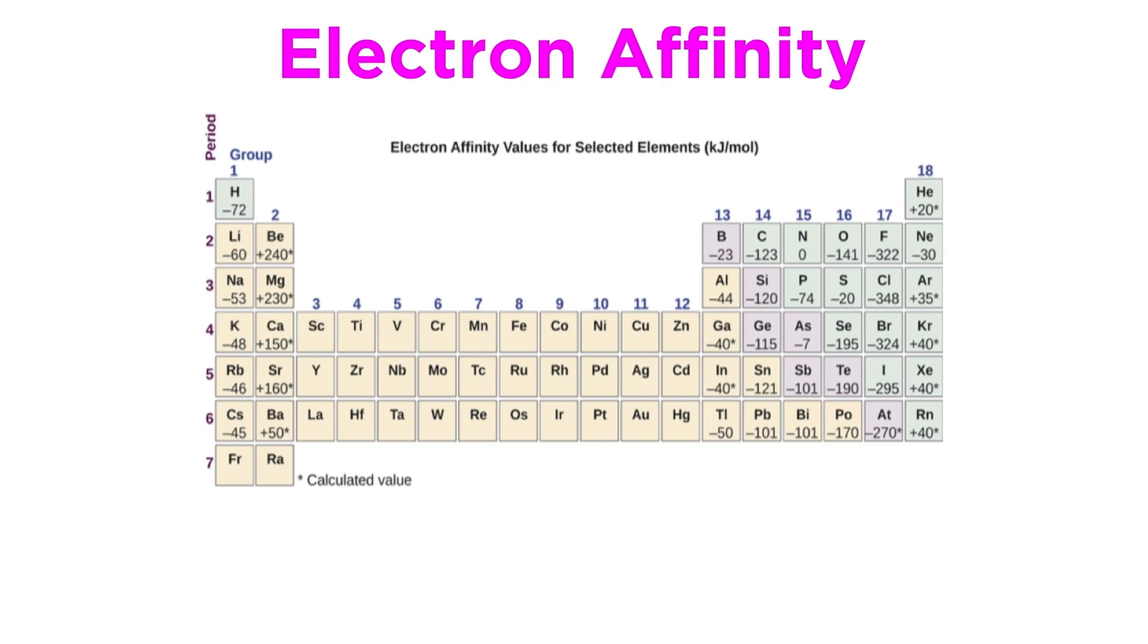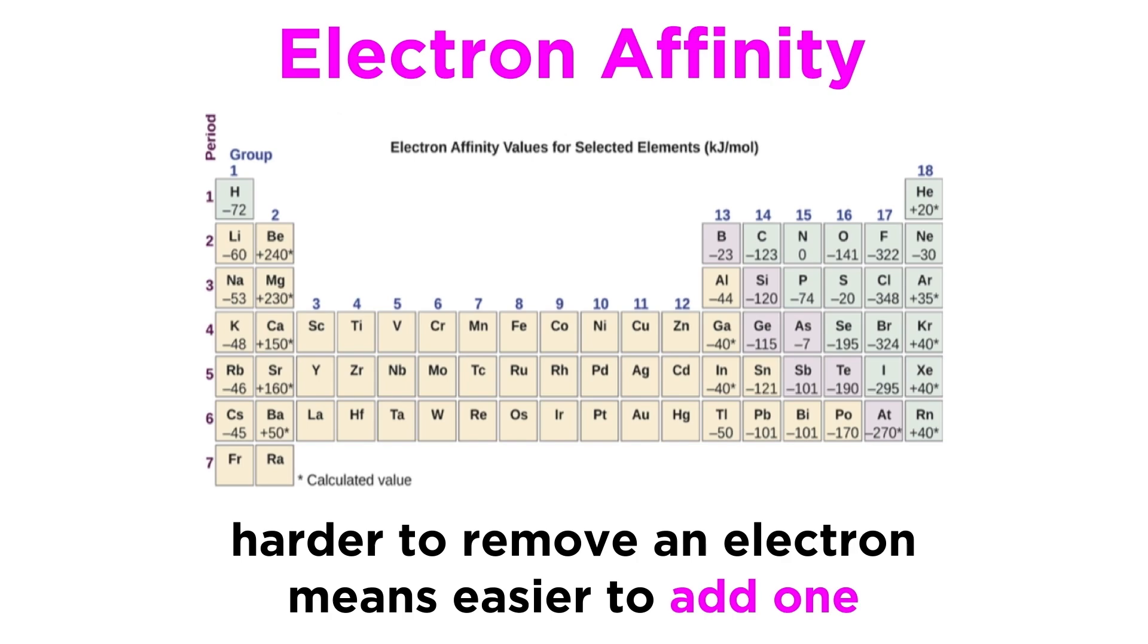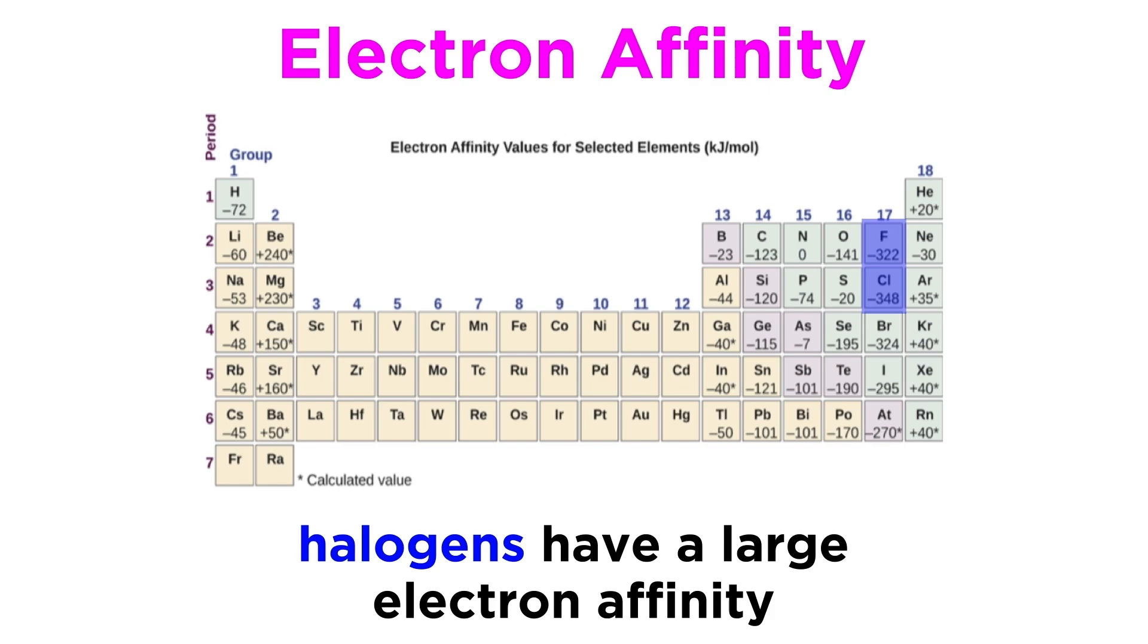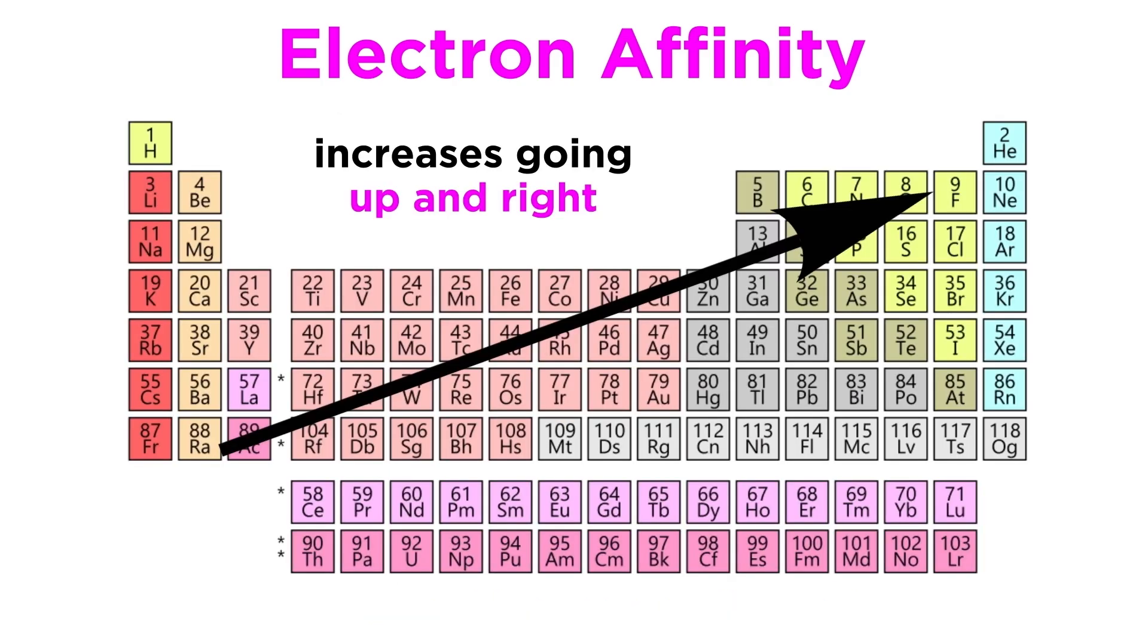Let's look at a periodic table with some electron affinities filled in. We can see that the trend is similar to the ionization energy trend, since the harder it is to remove an electron, or the higher the effective nuclear charge, the easier it is to add an electron, and thus a greater electron affinity. This is why elements like fluorine and chlorine have very large electron affinities, as gaining an electron will endow them with noble gas electron configuration, which is a very stable situation. So in general, electron affinity increases going up and right on the table, with some exceptions.